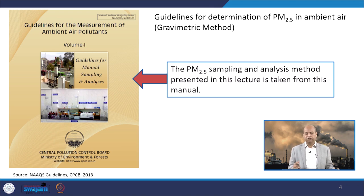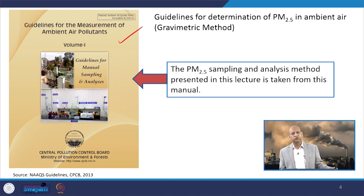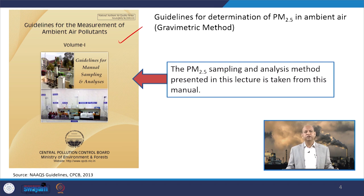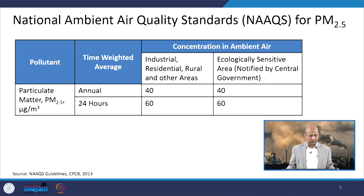The guidelines for determination of PM 2.5 in ambient air use the gravimetric method, taken from CPCB's Manual on Guidelines for the Measurement of Ambient Air Pollution, which covers all particulate matter as well as gaseous pollutants. The PM 2.5 sampling and analysis method described in this lecture is based on information derived from this particular document.